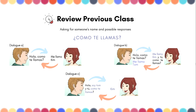Dialogue A: Hola, ¿cómo te llamas? Me llamo Kim. Dialogue B: Hola, ¿cómo te llamas? Me llamo Kim. ¿Y tú? ¿Cómo te llamas? Me llamo Tom.